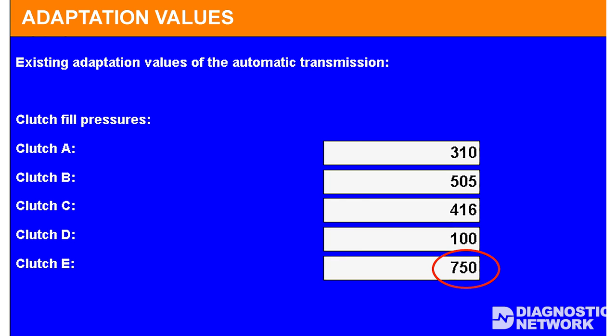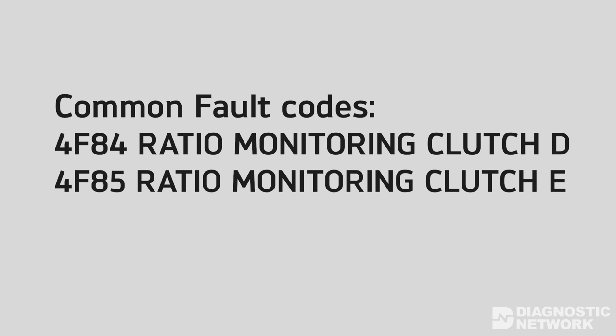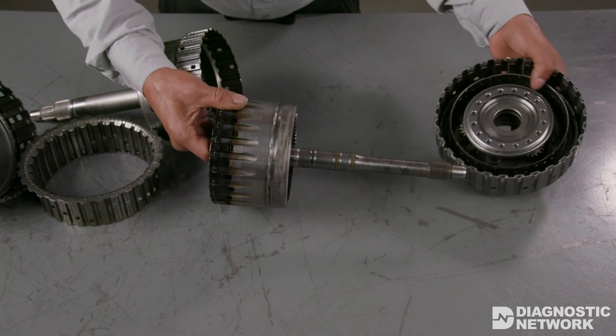Example 2. Let's analyze the data supporting an E-clutch failure, our second most common repair. The most common fault codes for these conditions are 4F84 or 4F85 — ratio monitoring for 4th and 5th gear respectively. In other words, the gear ratio expected for 4th or 5th gear was not achieved under those conditions, because the E-clutch slipped on that gear.